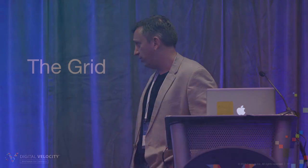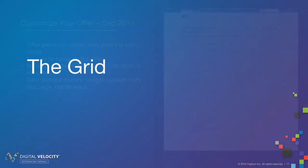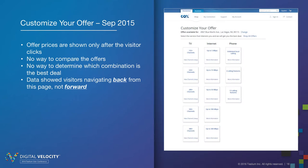Now let me show you a few projects. The first one we call 'The Grid.' Quick background: we have an e-commerce funnel with offers — we sell internet, TV, and phone. If people don't see a pre-configured offer they like, they can go customize their own, which we call BYOB — Build Your Own Bundle. Each square in the grid corresponds to different tier levels of TV service, internet, and phone service.